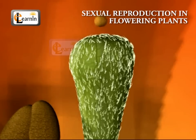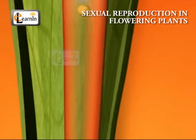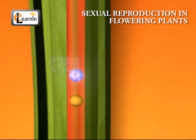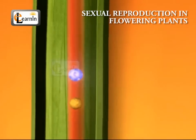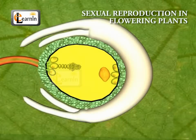After the pollen lands on a suitable stigma, it has to reach the female germ cells, which are in the ovary. For this, a tube grows out of the pollen grain and travels through the style to reach the ovary.